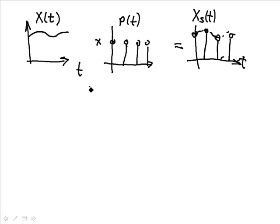Mathematically, this means that our X sub s of t is equal to the product of X of t times P of t. But we note that that's a convolution in the frequency domain.